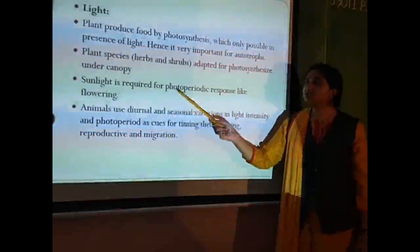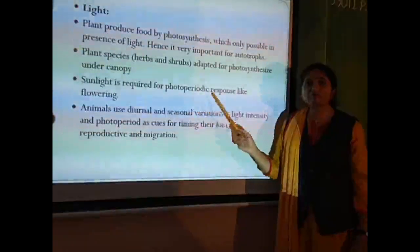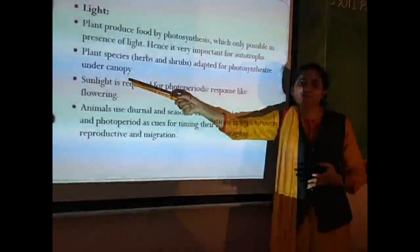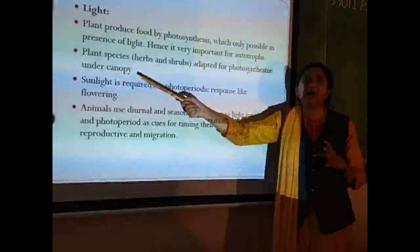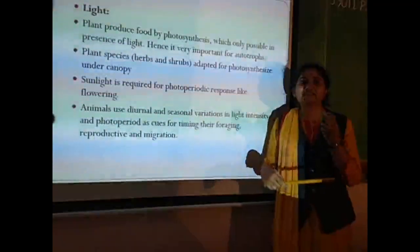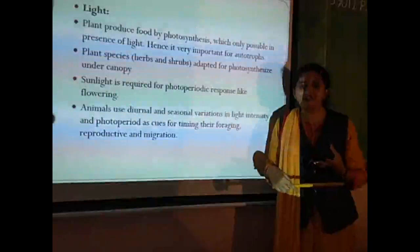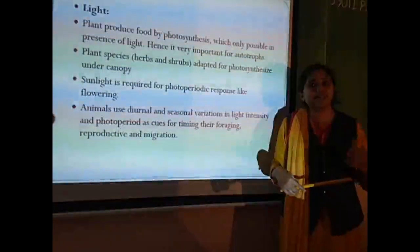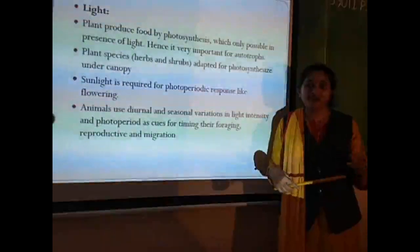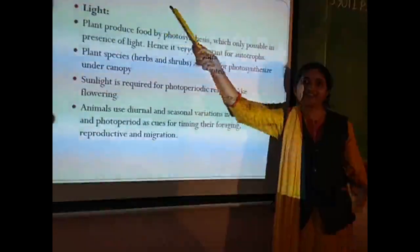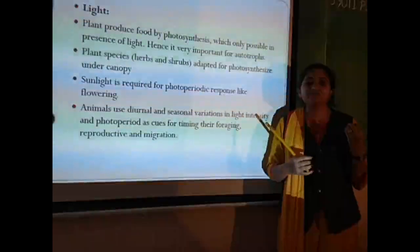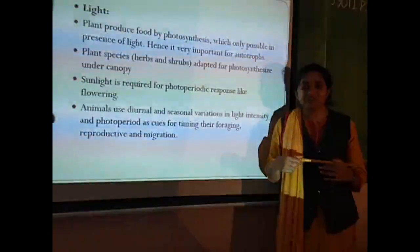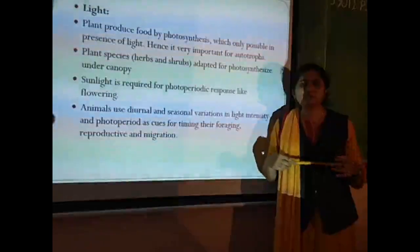Sunlight is also required for photoperiodic responses like flowering. Almost all plants depend on light for their blooming or flowering. Flowers usually bloom during the day because they depend on light and take responses from it. The beautiful colors of flowers are also due to light, to some extent.